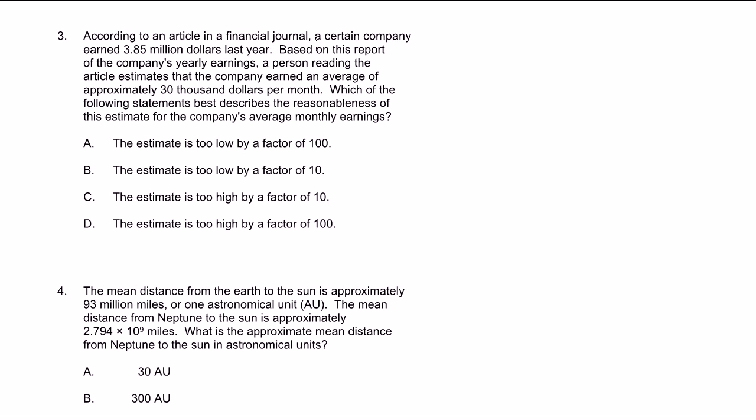According to an article in a financial journal, a certain company earned $3.85 million last year. Based on this report of the company's yearly earnings, a person reading the article estimates that the company earned an average of approximately $30,000 a month. They're saying estimates, so we don't have to do the exact math. Which of the following statements best describes the reasonableness of this estimate for the company's average monthly earnings? So $3.85 million last year, and then we want to be able to estimate how many monthly earnings.